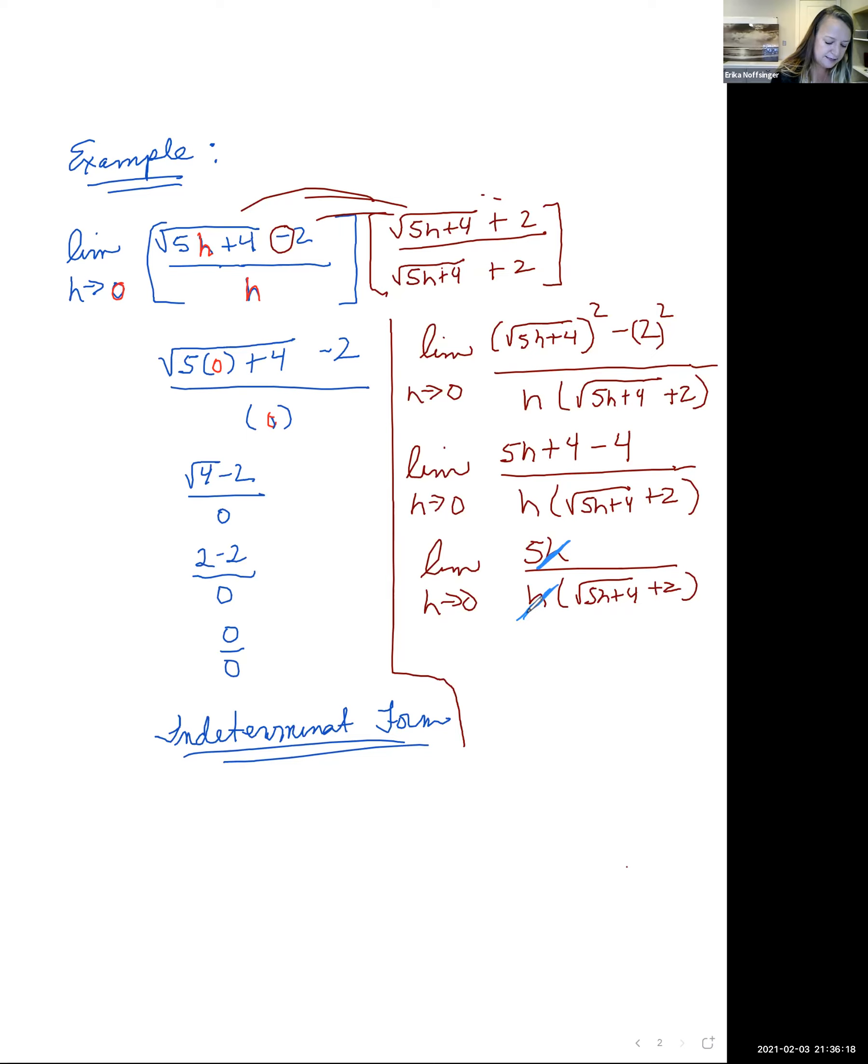And so if we rewrite this limit, we have a limit as h approaches 0 of 5 in the numerator, all over the square root of 5h plus 4 plus 2.